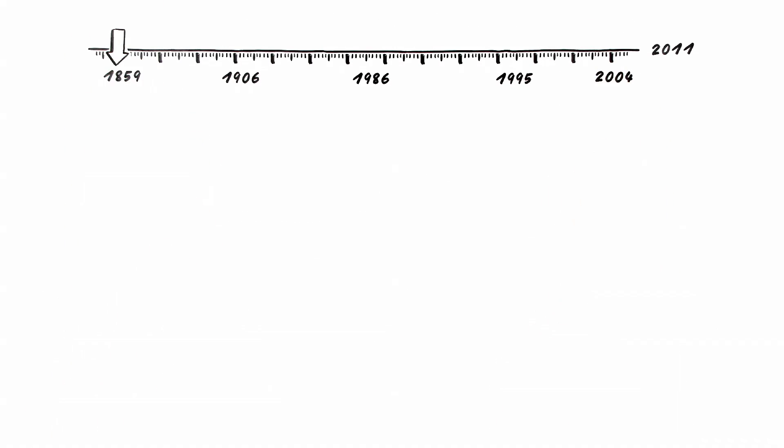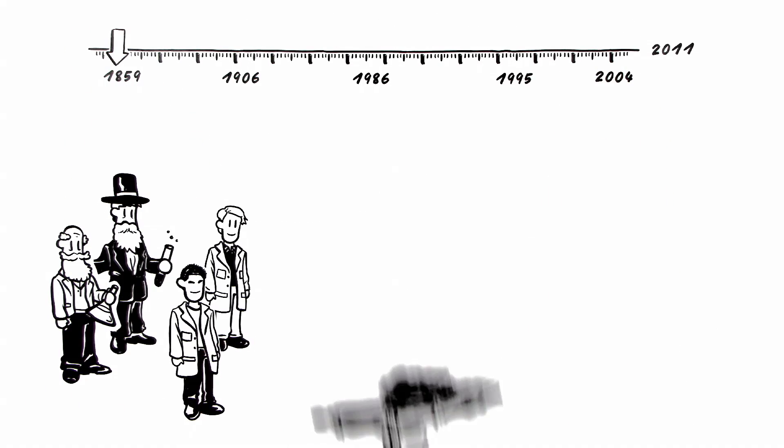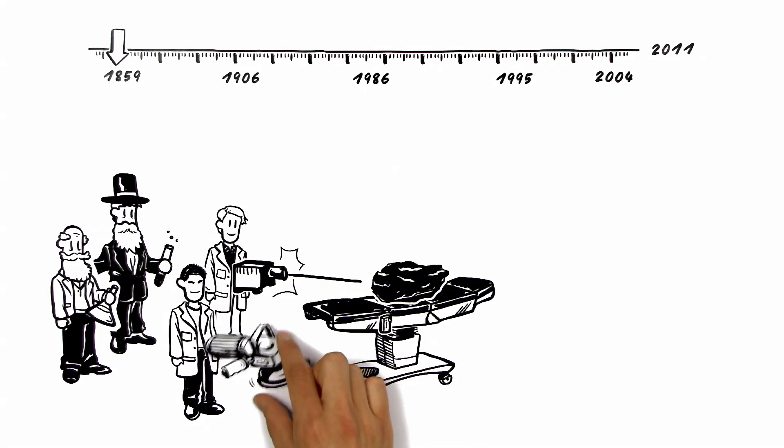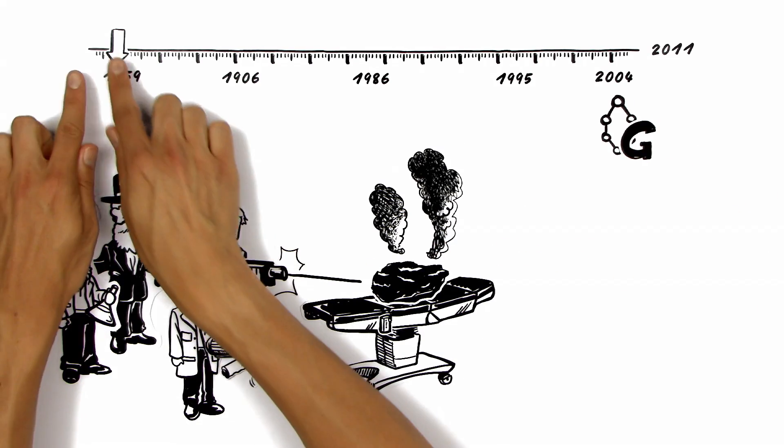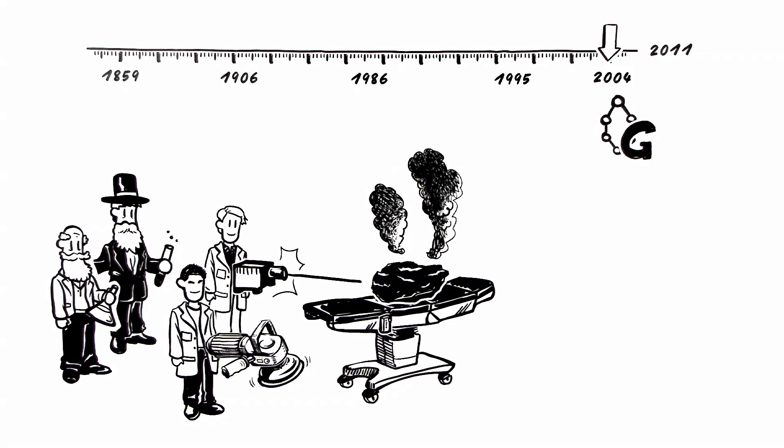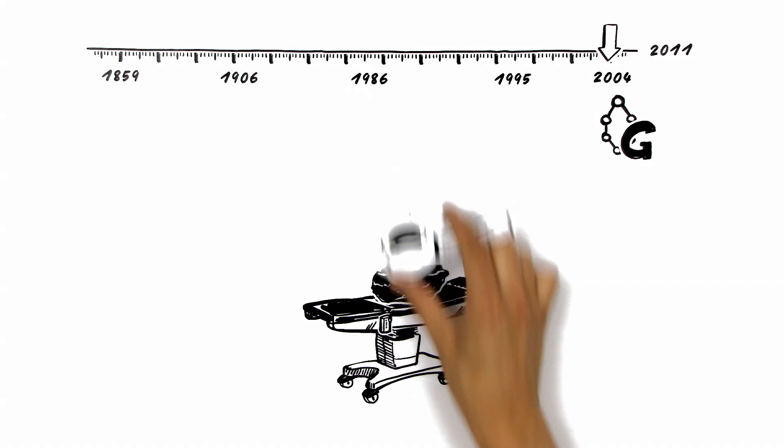Since 1859, many scientists were looking for graphene using complex experiments. But the first crystals of graphene were discovered in 2004 using a very simple and effective method: ordinary Scotch tape.